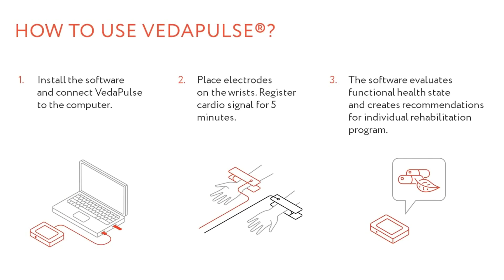To evaluate the current client's condition with the help of the VetaPulse technology, all you need is connect the device to the PC or laptop through the USB port and place the electrodes on the client's wrists, then start a 5-minute ECG signal recording.